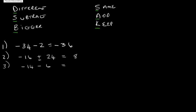Let's look at minus 14 minus 6. Are the signs the same or are they different? It's minus 14 and minus 6 — the signs are the same, so we use the SAK rule. We add them: 14 and 6 is 20, and we keep the sign. Lastly, let's look at minus 13 plus 2. They are different, so we subtract the two numbers. 13 minus 2 is 11, and we keep the sign of the bigger number which is 13. So your answer will be minus 11.